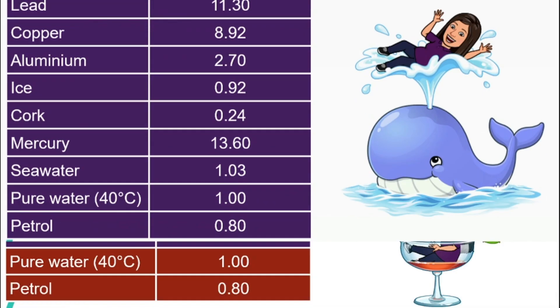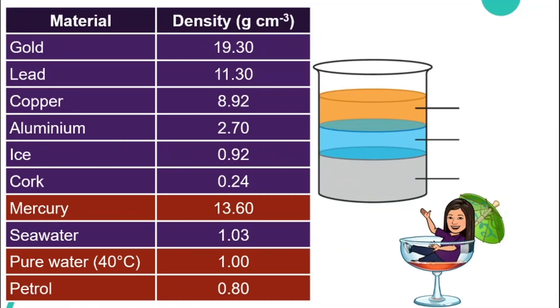So let's see if we have three different liquids in this beaker and I tell you they are mercury, pure water and petrol. How do we know which one is the first layer? Which one is the second one? Which one is the third one? We can compare their density.